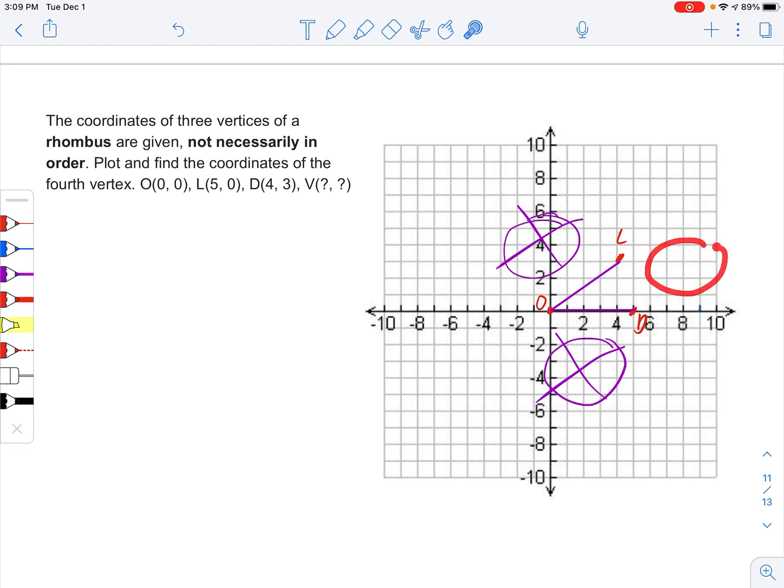And so now I want to figure out where over here in this area it could be. The easiest way to do that is I notice that OD, from O to D, is five units. It goes from zero to five.